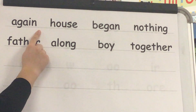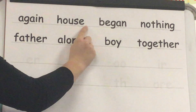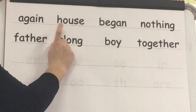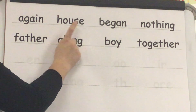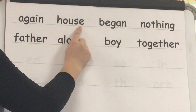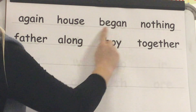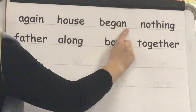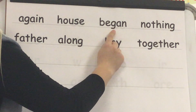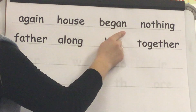Yes, again. This word is house. What word? House. Spell house: H-O-U-S-E. Word? House. Yes, house. This word is began. What word? Began. Spell began: B-E-G-A-N. Word? Began.